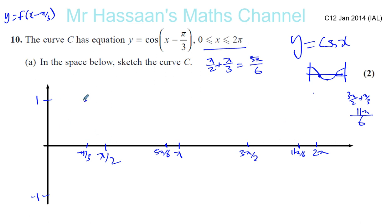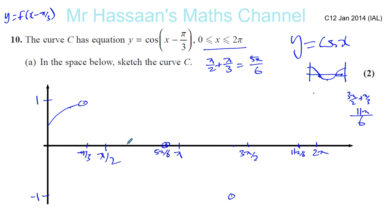It's going to look like this — going through those points. Normally it hits 0 at pi, so now it hits 0 at pi plus pi over 3, which is 4 pi over 3. So 4 pi over 3 is another zero crossing.